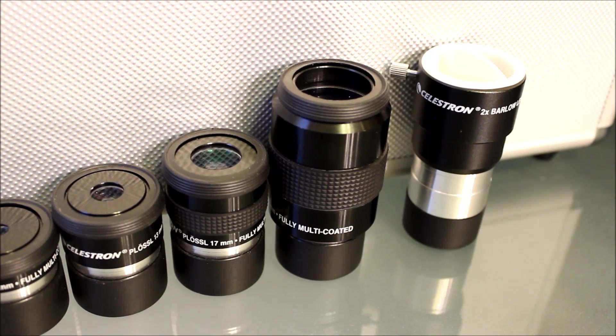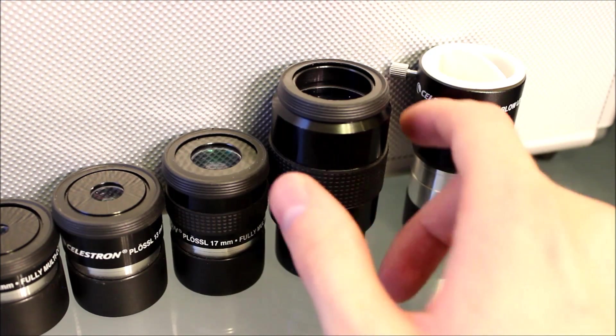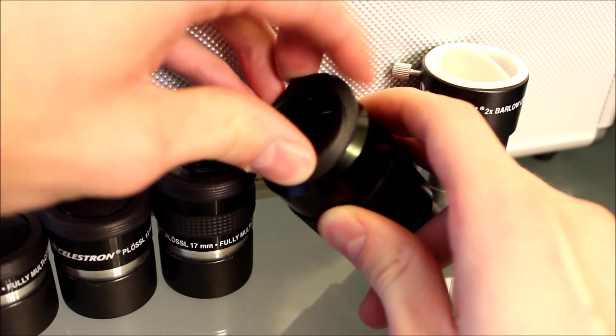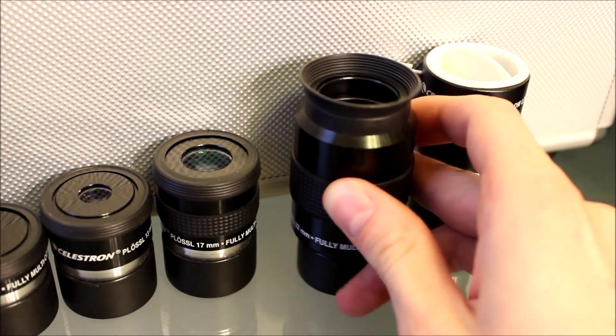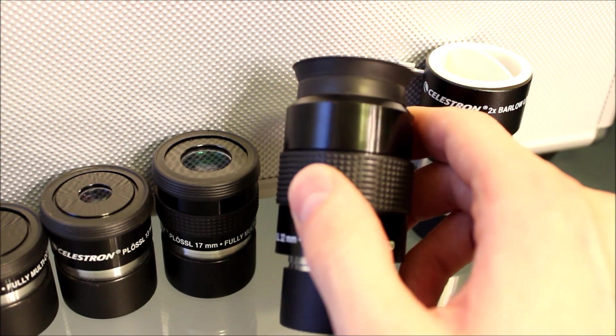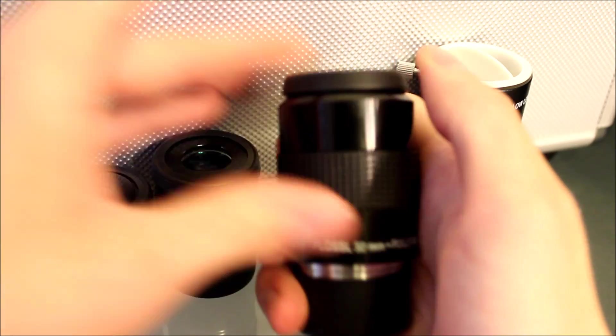As with most eyepieces these days, the Celestron eyepieces come with rubber eye cups. So if you prefer to use these, you just fold them up and you can use those to view. If not, obviously, they'll just stay down for you.